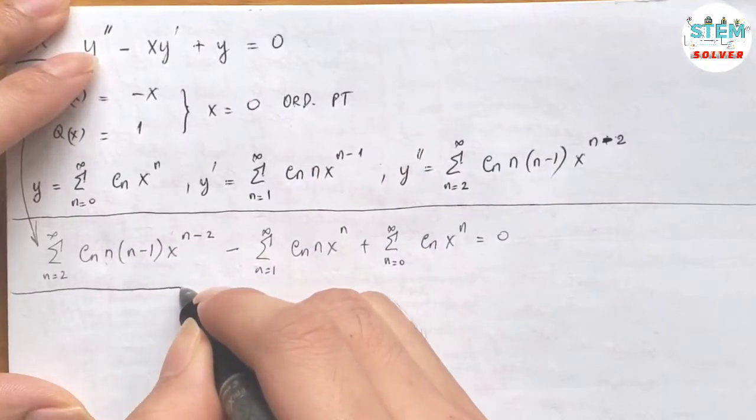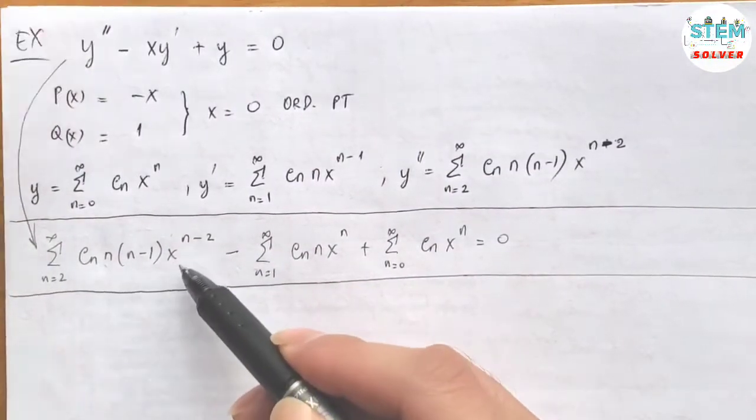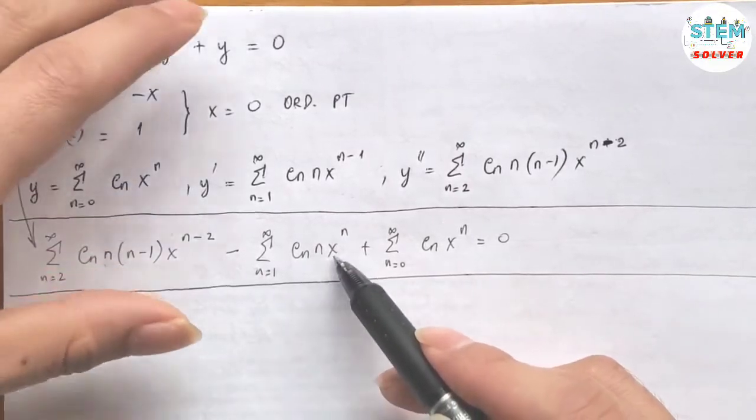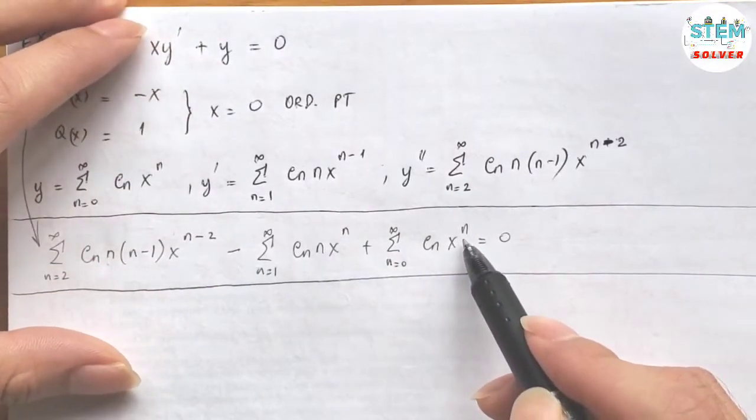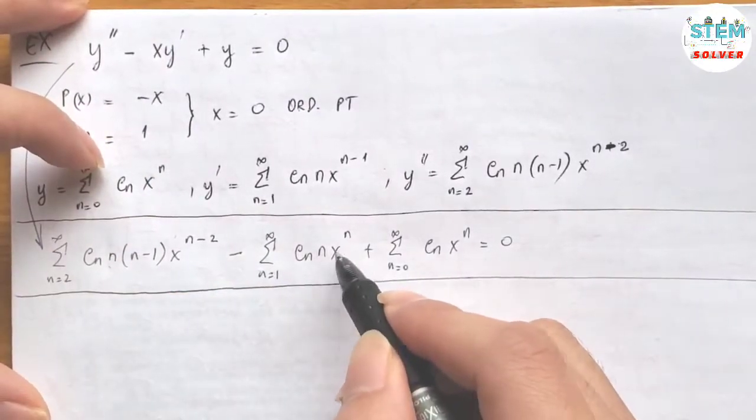Now we are going to take a look at the power. So n equals zero plug in, I have x to the 0. n equals 1 plug in, I have x to the first. So we have to run out terms for these power series to get x to the first.